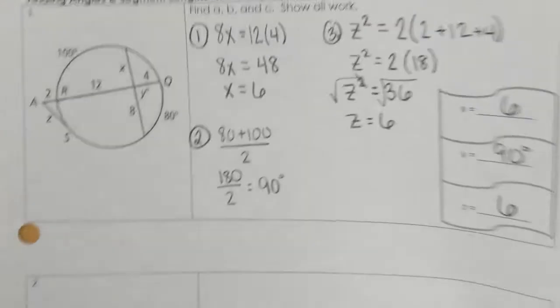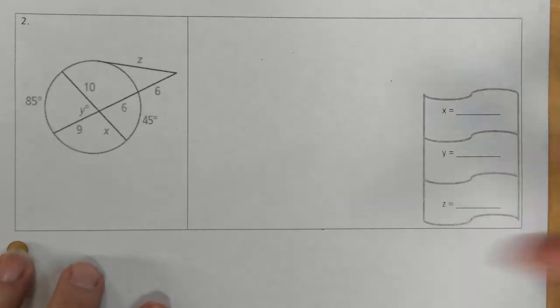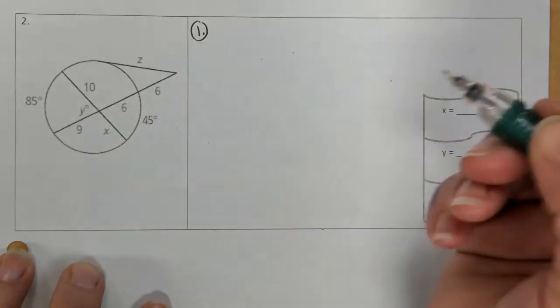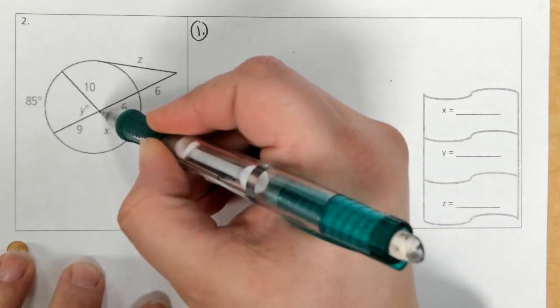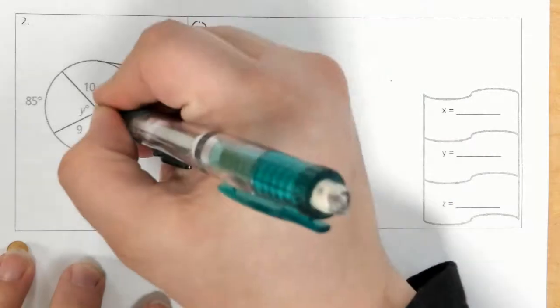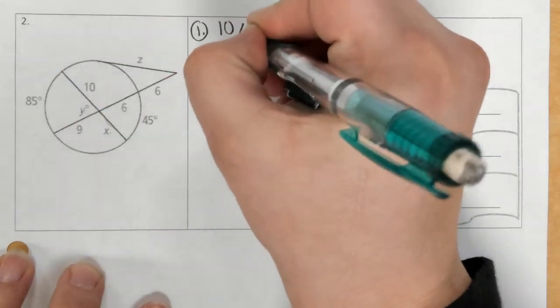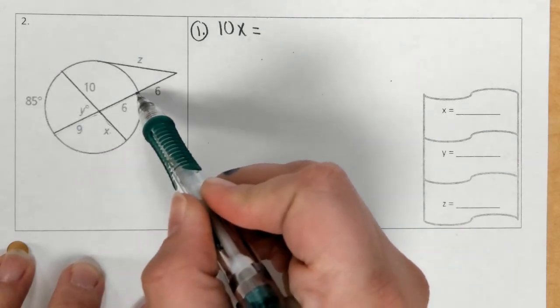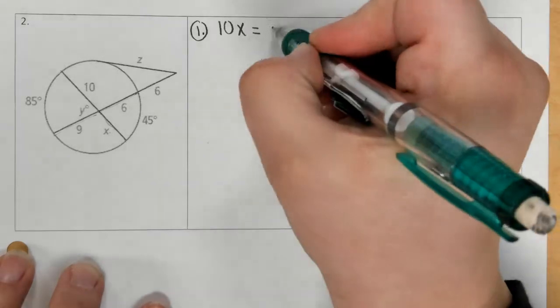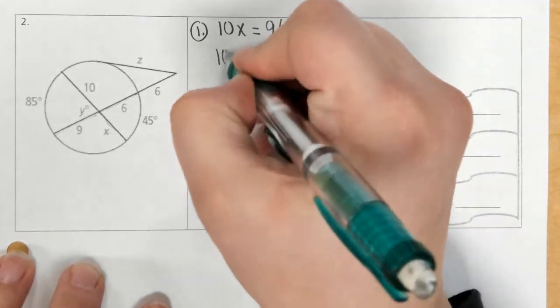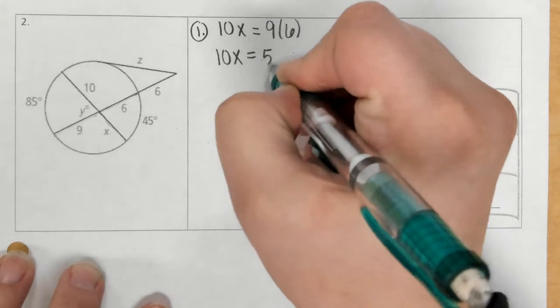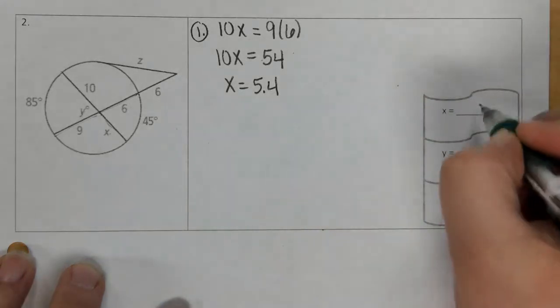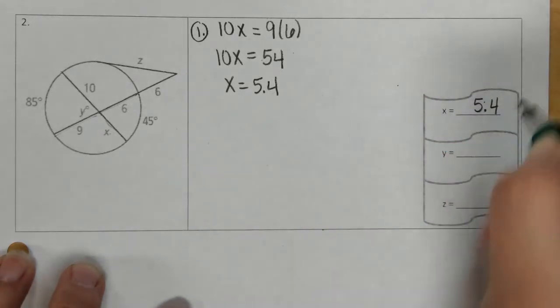The other example, example 2 here that will help you, is for x we're doing basically the same steps. We're going to have the segment x times segment 10, so 10x equals 9 times 6. We only go to this point right here, so 9 times 6. And if we divide by 10, we get x equals 5.4.